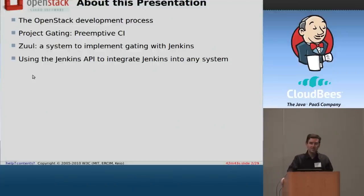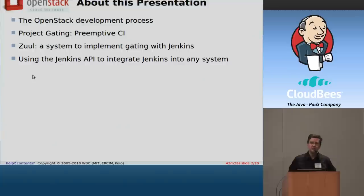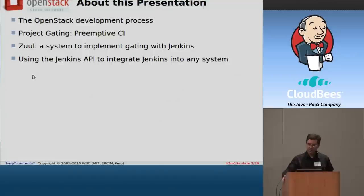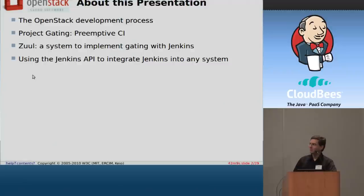This is kind of a new area for CI, and I think it's a really interesting area. It's essentially preemptive CI — so instead of having your CI system tell you who broke something and when and where, you try to prevent things from being broken in the first place. I'm going to be talking about Zuul, which is a system that we wrote to perform trunk gating. It's free software that talks to Jenkins over the Jenkins API, as well as interfacing with Gerrit, which is our code review system.